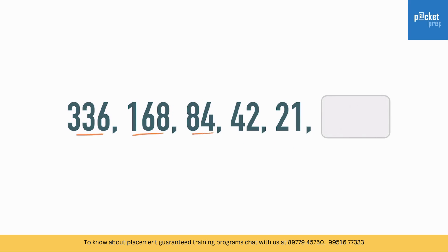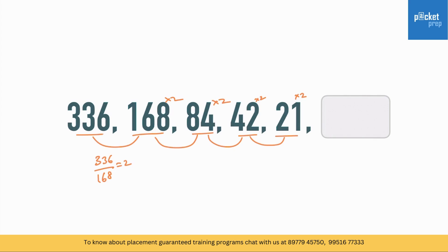Let's try a ratio example: 336, 168, 84, 42, 21. Observing that 21 times 2 is 42, 42 times 2 is 84, 84 times 2 is 168, 168 times 2 is 336 — the ratio between consecutive terms is 2. So the next number is 21 divided by 2, which is 10.5. That is the second method: difference or ratio.